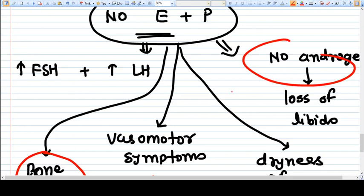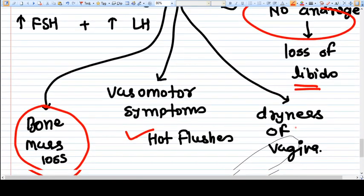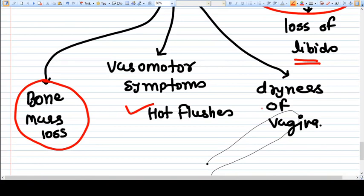The androgens are the byproducts of estrogen and progesterone, and androgens are responsible for libido. That's why we don't have any more amount of androgens, and so at menopause the female loses libido.